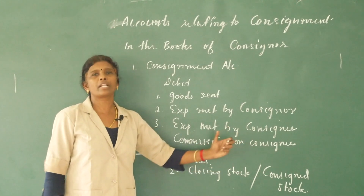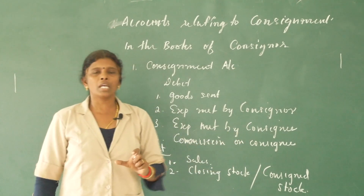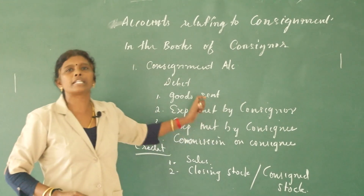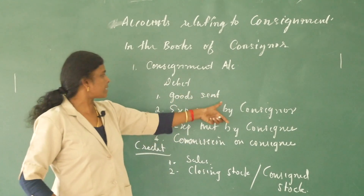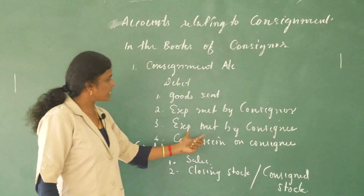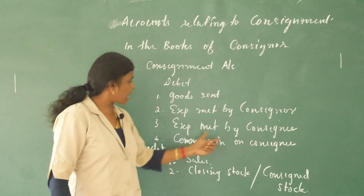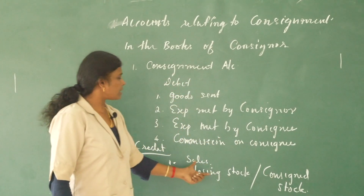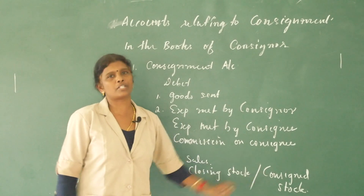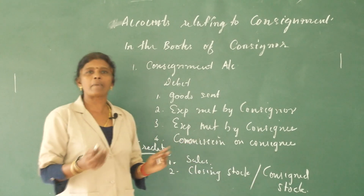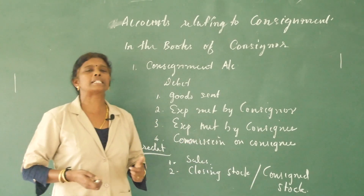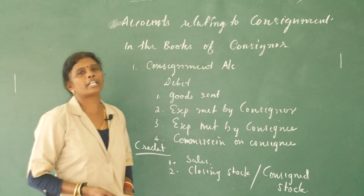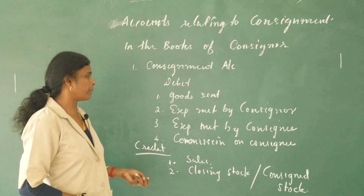Consignment account is a nominal account, prepared in consignment business. Debit side: goods sent to consignment, expenses met by consigner, expenses met by consignee, commission on consignee. Credit side: sale proceeds, closing stock or consigned stock. The account balance is a resultant figure — it shows either profit or loss.